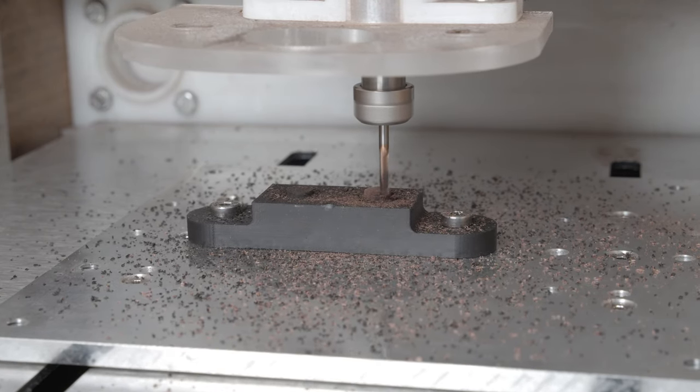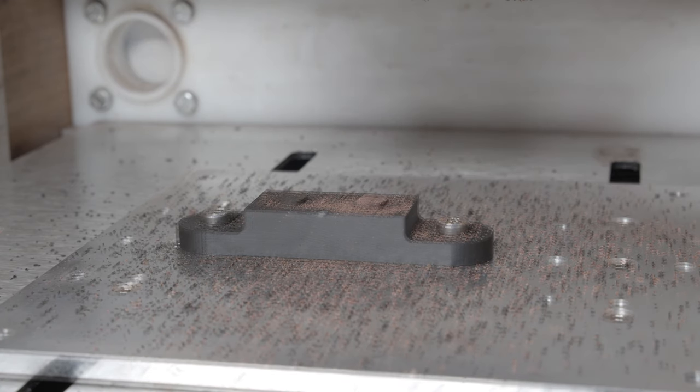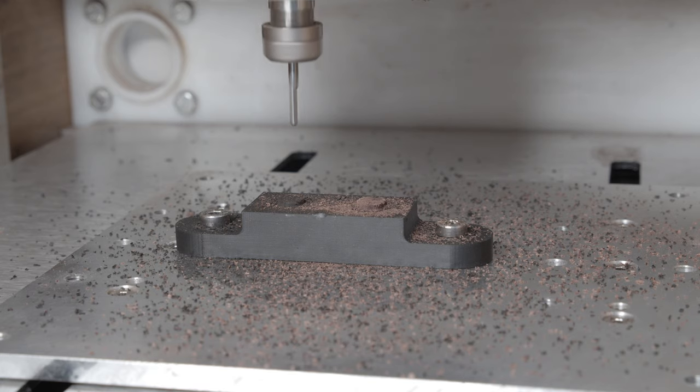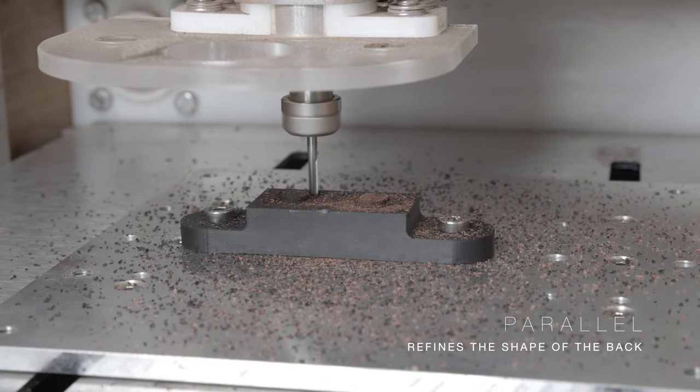On the left, you see an ebony switch tip being machined at the same time as a rosewood on the right. At this point, we switch back to the ball end mill, so that we can perform parallel operation on the bottom of the switch tip.